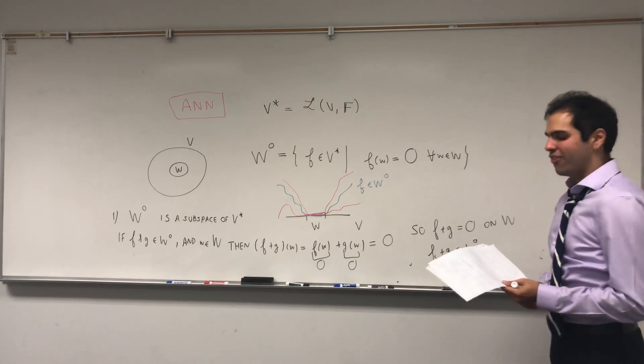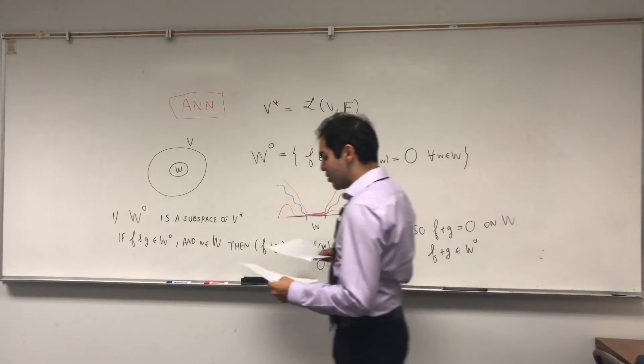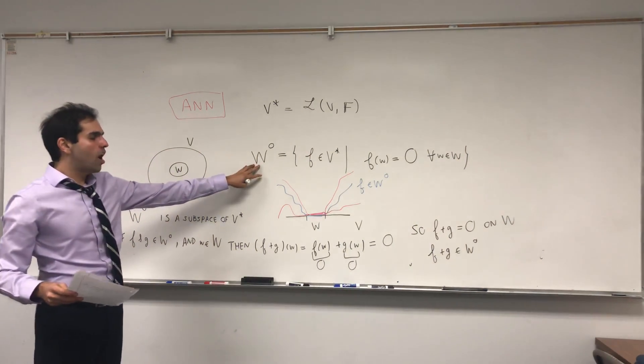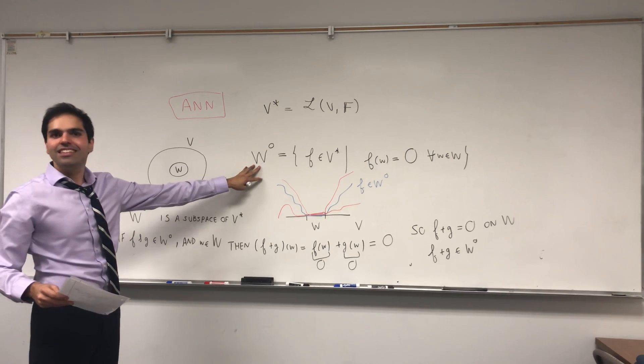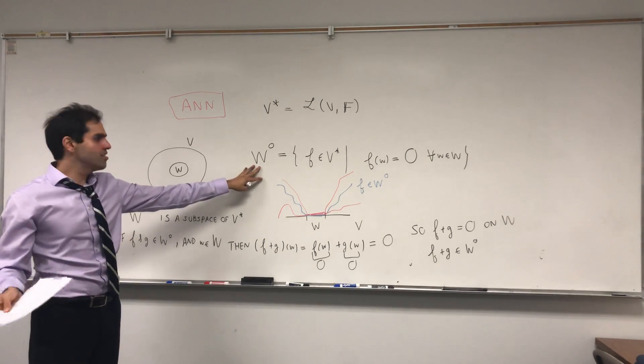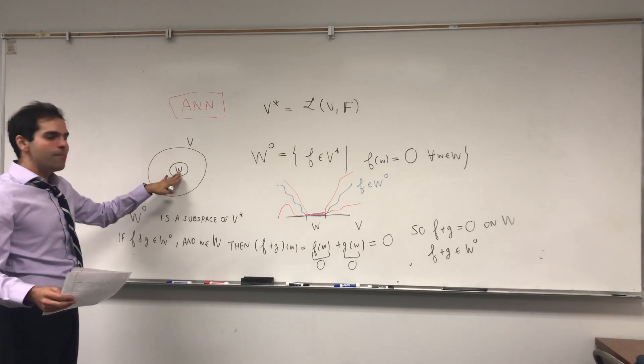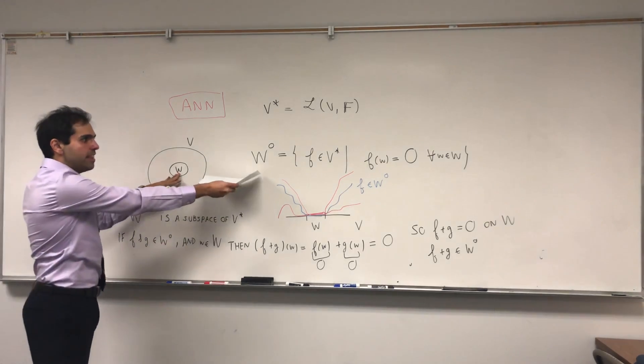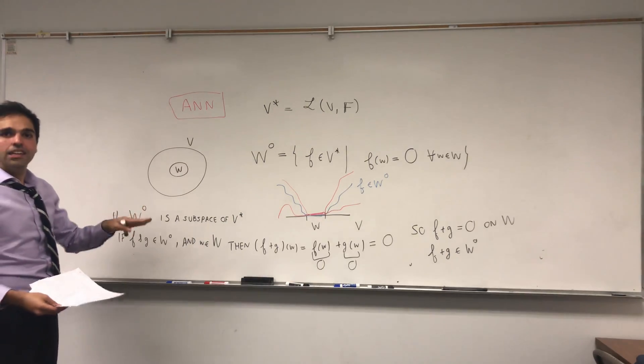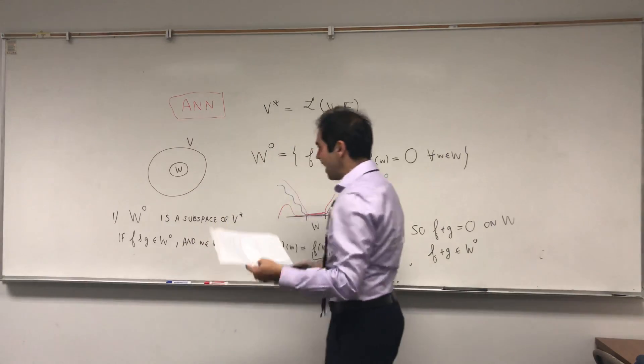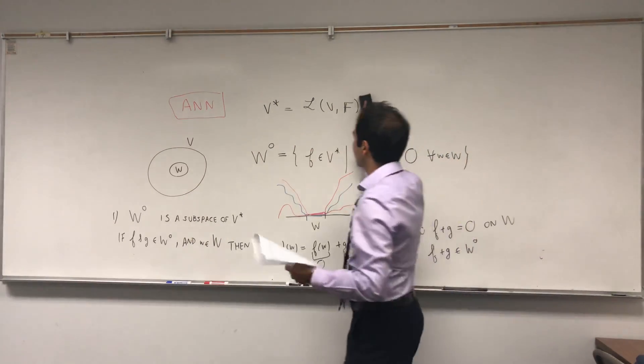So that's one very cute fact, and what's even cooler, I think, because technically W naught is in the dual space which technically has nothing to do with V itself. But it turns out if you add the dimension of W and the dimension of W naught, you actually get the dimension of V, which is kind of a rank-nullity theorem kind of thing.